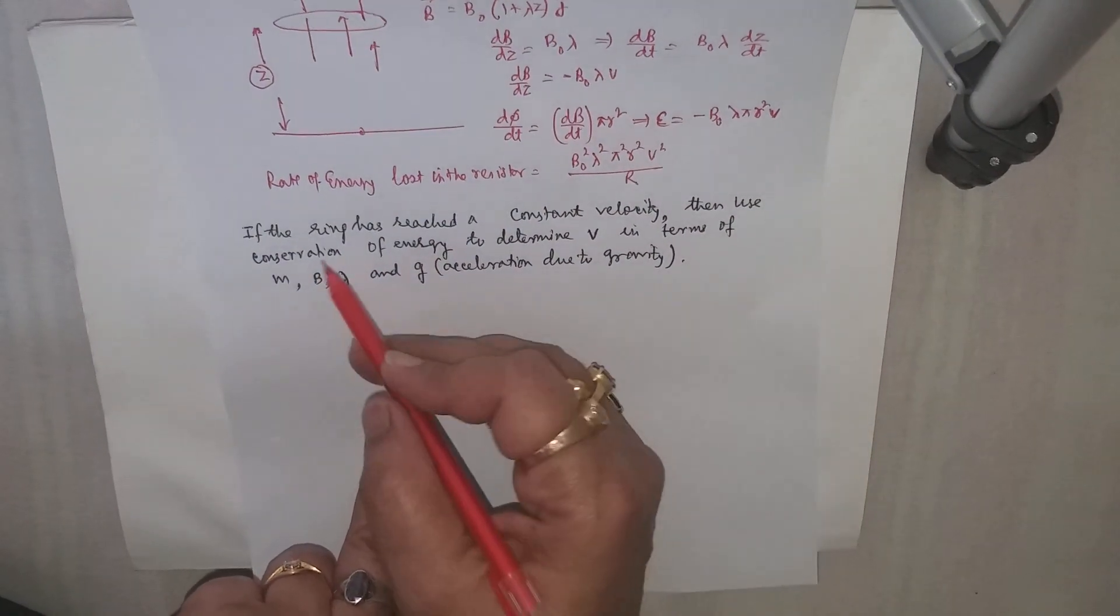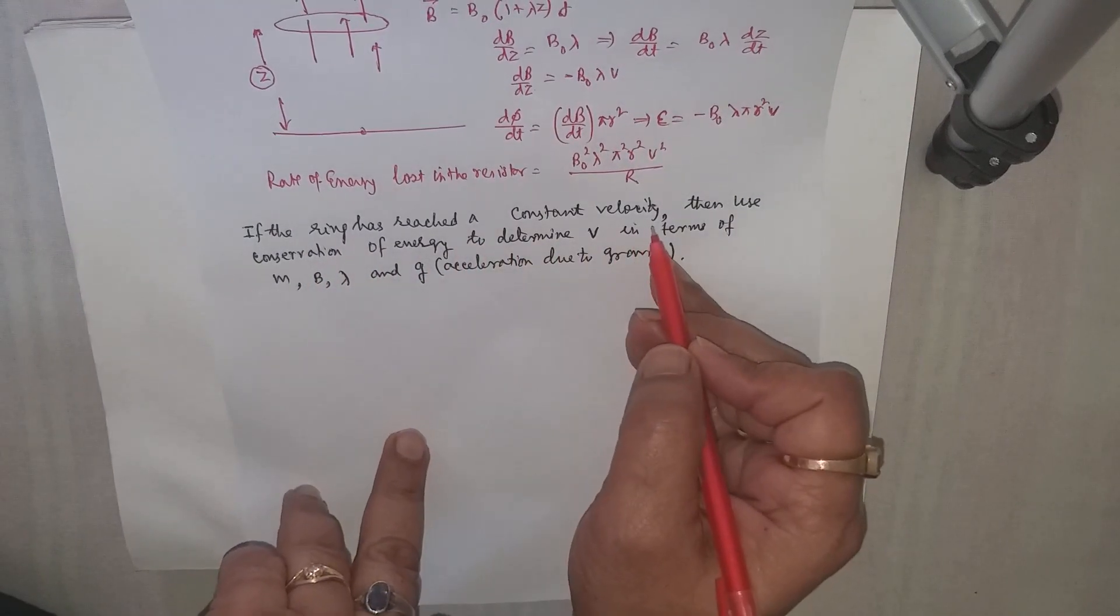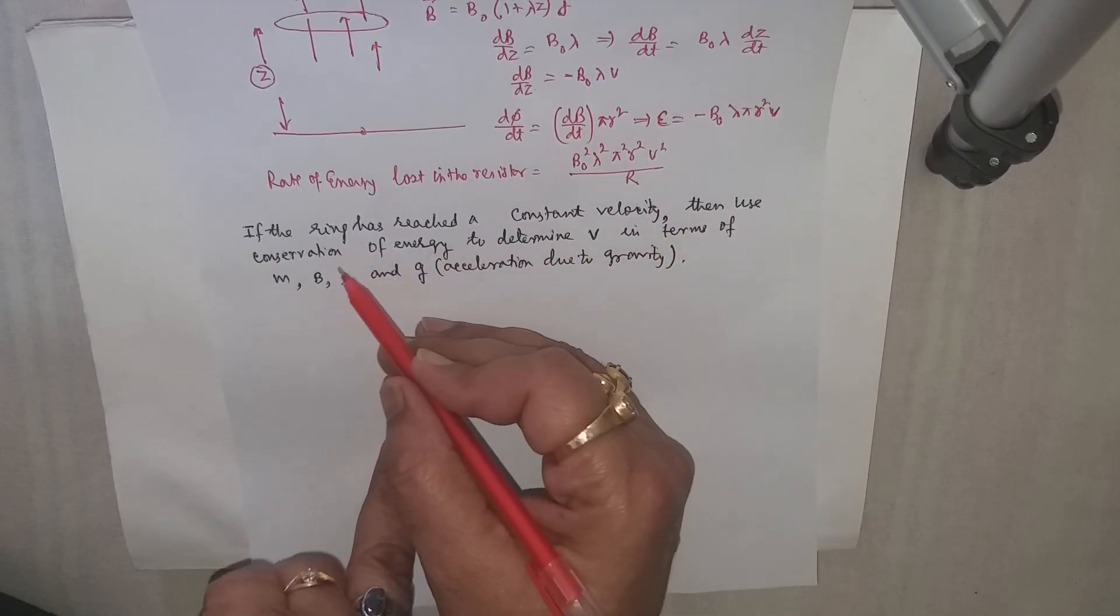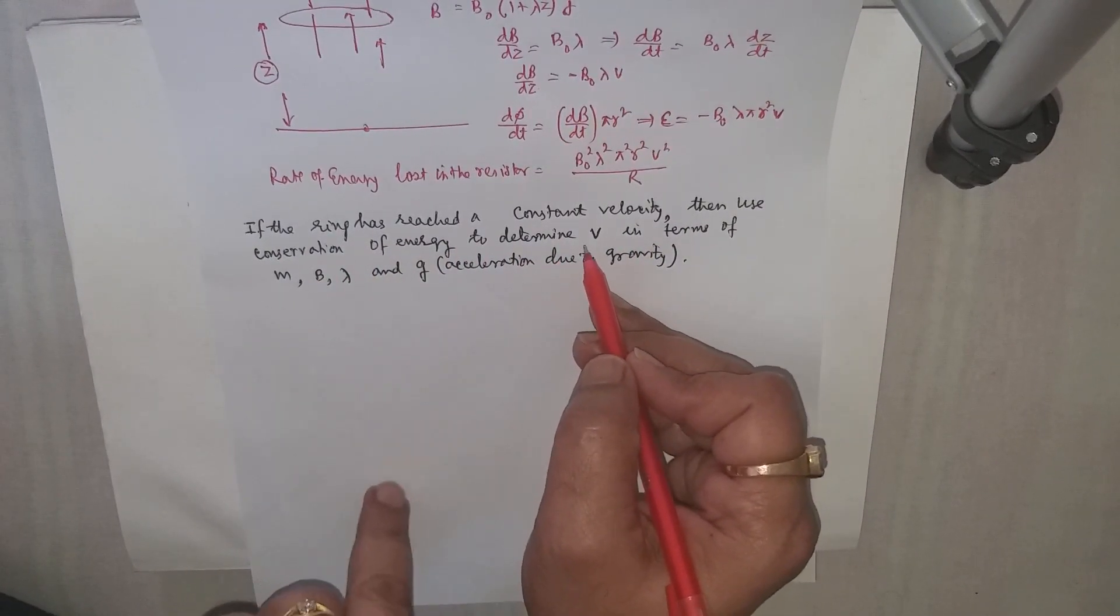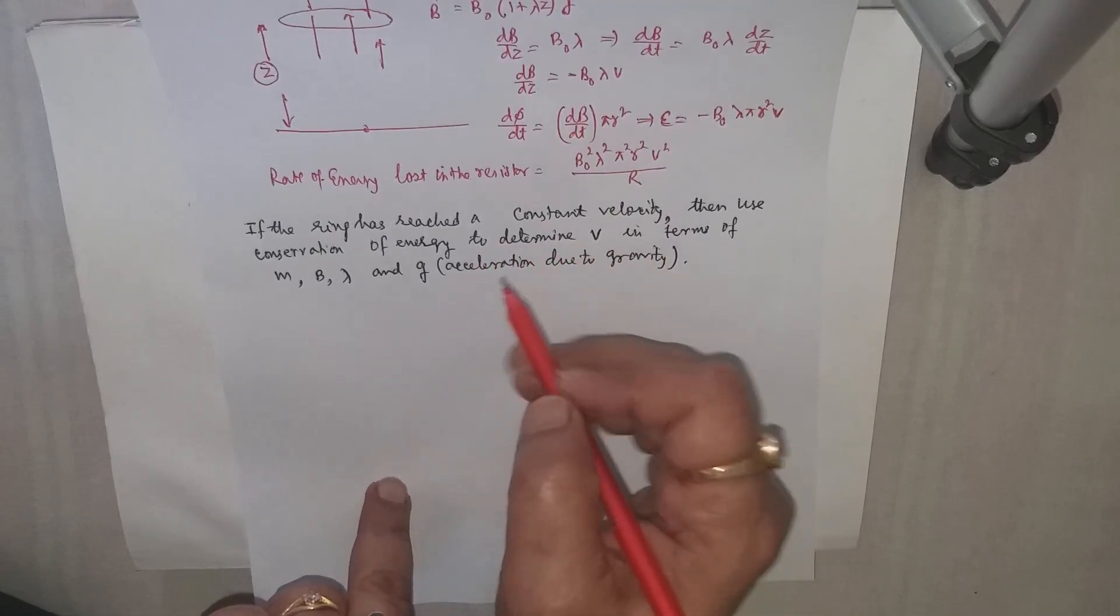Now further they are asking that if the ring has reached a constant velocity, then find or determine the velocity v.